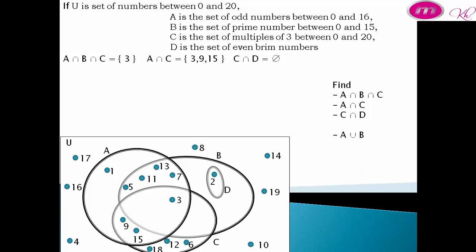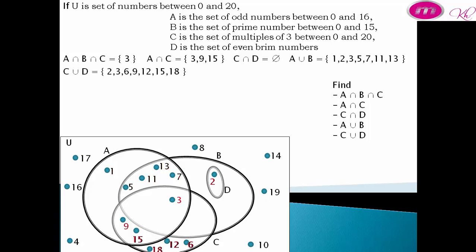A union B equals {1, 2, 3, 5, 7, 11, 13}. C union D equals {2, 3, 6, 9, 12, 15, 18}.